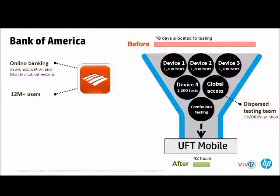Bank of America, with almost 12 million customers using their online banking application, previously spent 18 days testing on multiple devices with hundreds of test cases and distributed testers. They faced challenges in reducing cycle time and managing device access. After adopting HP UFT Mobile, they reduced their testing cycle time from 18 days to 42 hours — demonstrating the significant savings from adopting automated mobile application testing.